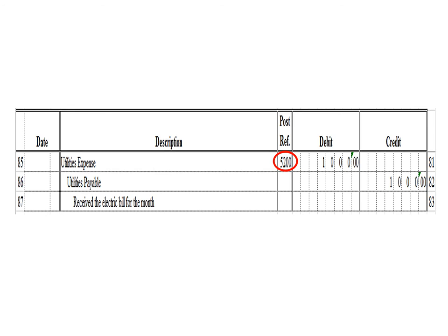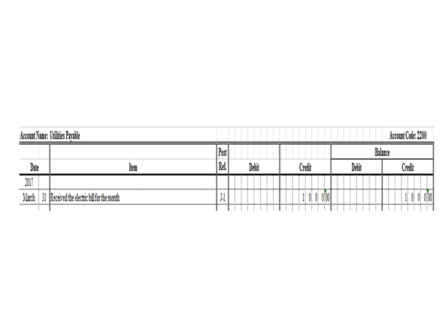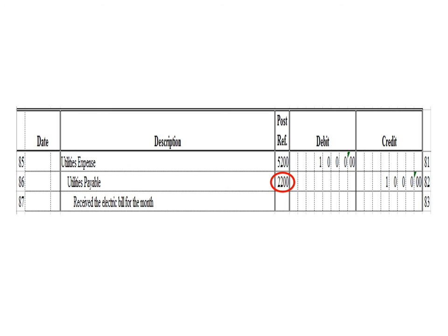Let us post the credit entry — credit to utilities payable 1,000 pesos. In the utilities payable ledger, we write date March 31, description: received the electric bill for the month, posting reference J1. Under the credit column, write 1,000 pesos, and in the balance section under credit, write 1,000 pesos. After posting, write the posting reference 2200, the account code for utilities payable.